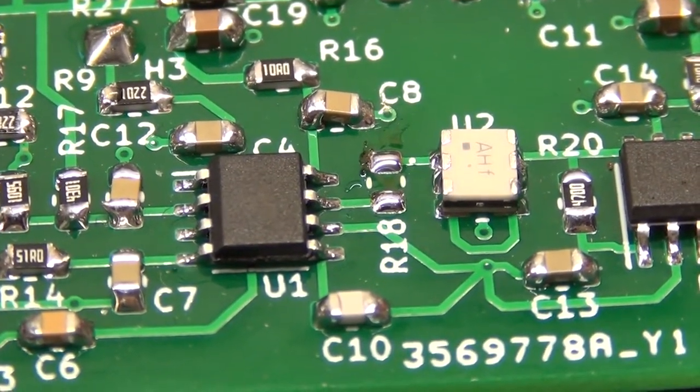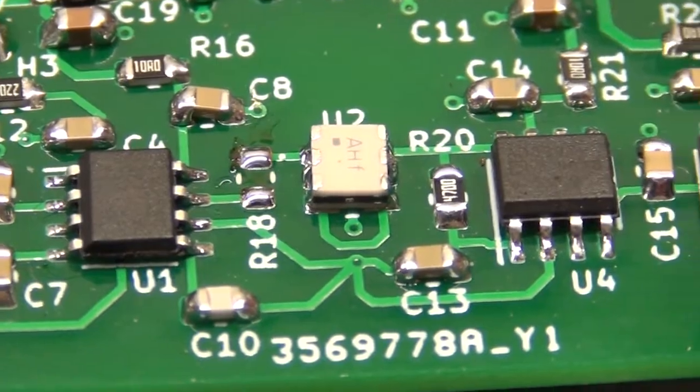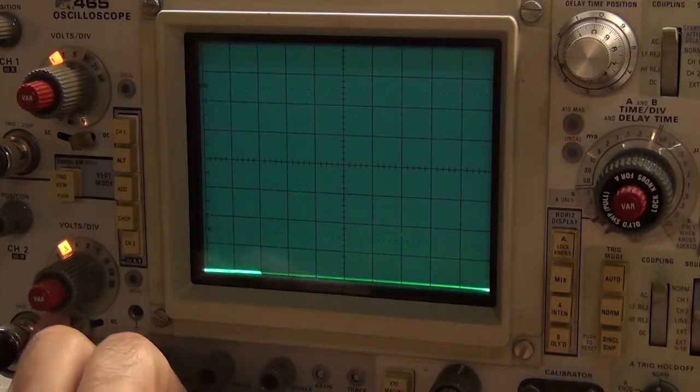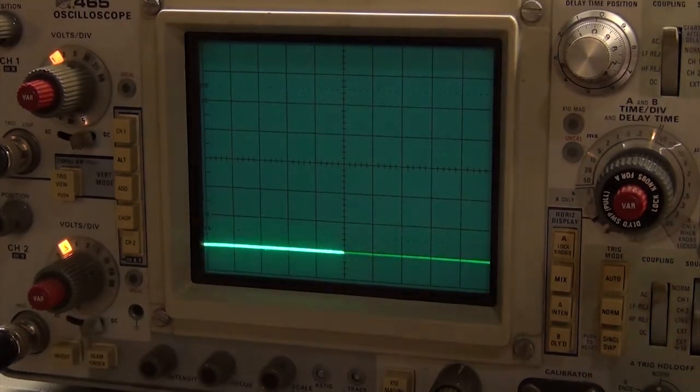Here's the spot after desoldering R18. And pay no attention to my crappy soldering job on C8. Let's see what it looks like now. I set the channel input to ground to re-zero it so now I'll switch it back to DC and the trace is noise free. So that's good. That's what I would have expected.